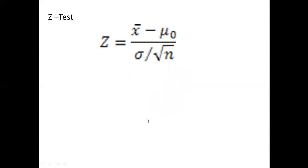Now, z-test. Z-test was given by Fisher. If the population correlation coefficient is not 0, then z-test is used. In t-test, the population correlation coefficient is 0, but in z-test it is not. In z-test, sample size is large, that is n greater than 30, but in t-test n is less than 30. Z-test is used to determine if two population means are different when population variance is known.